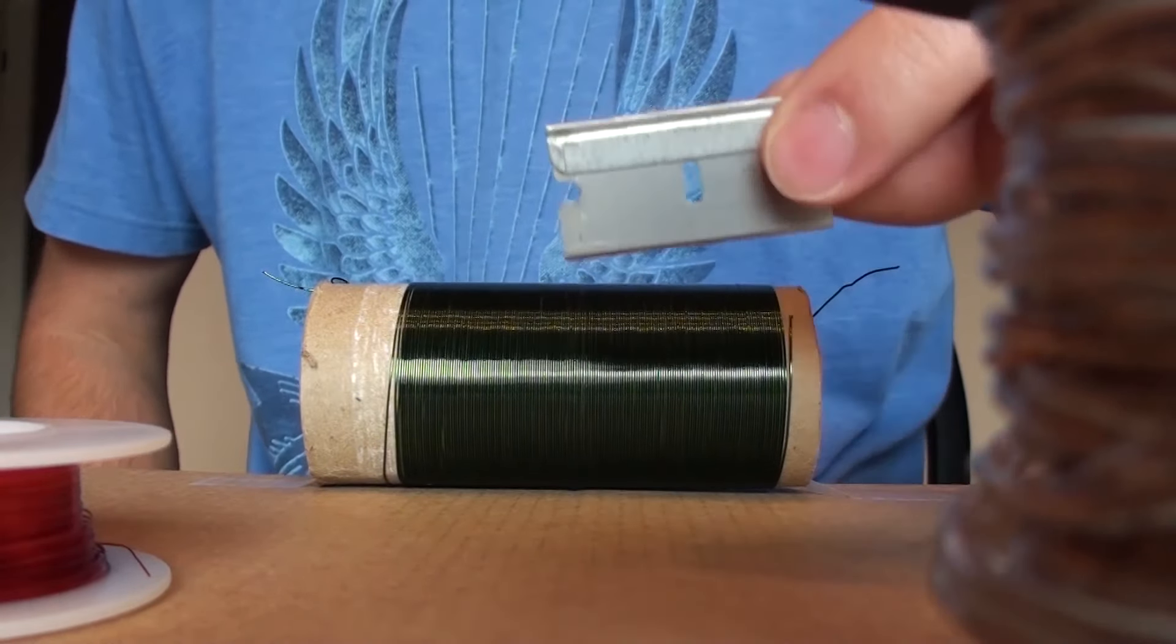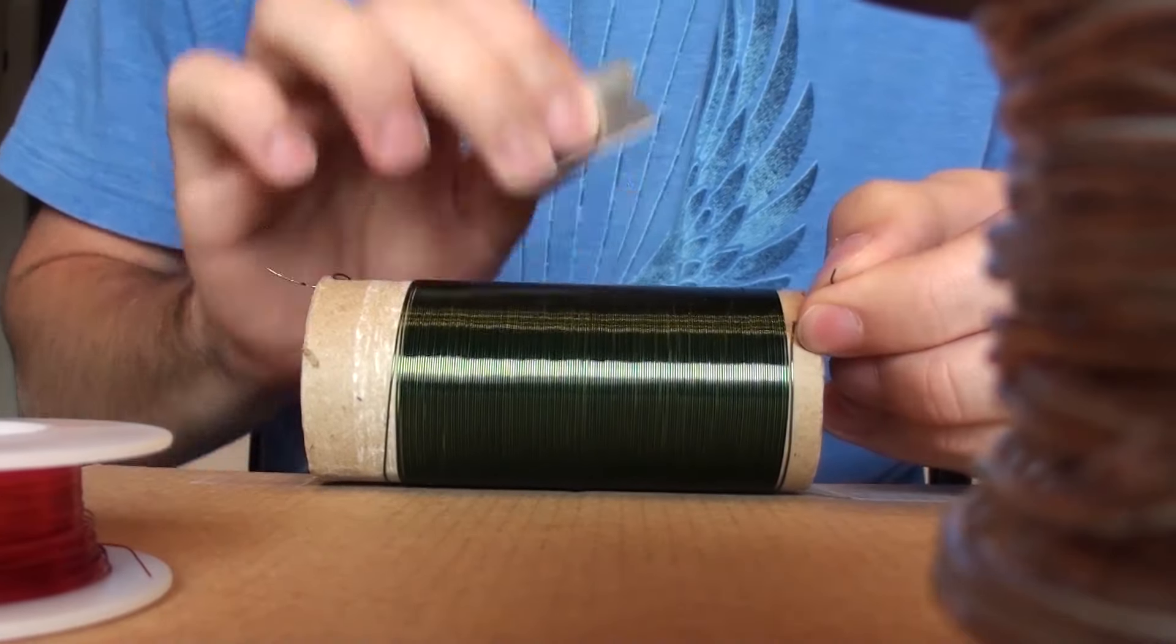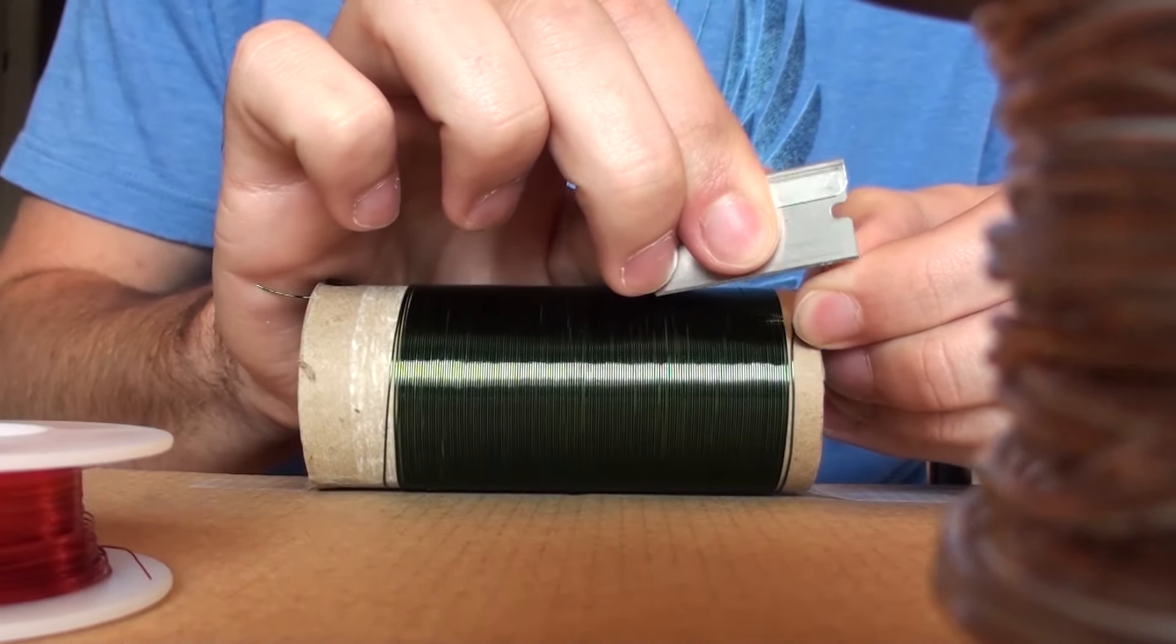Next up we need to take our razor blade and scrape some of the coating off this wire so we can connect it to the other wires.